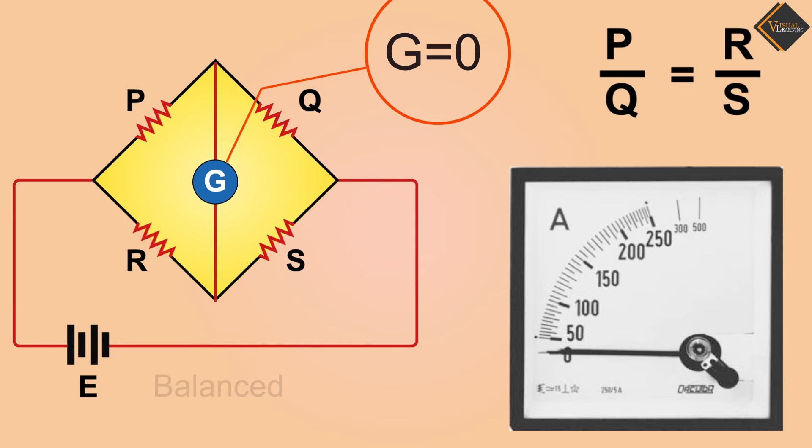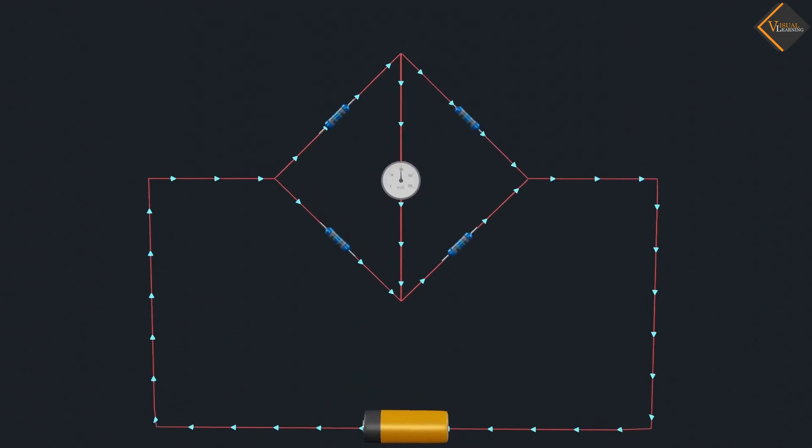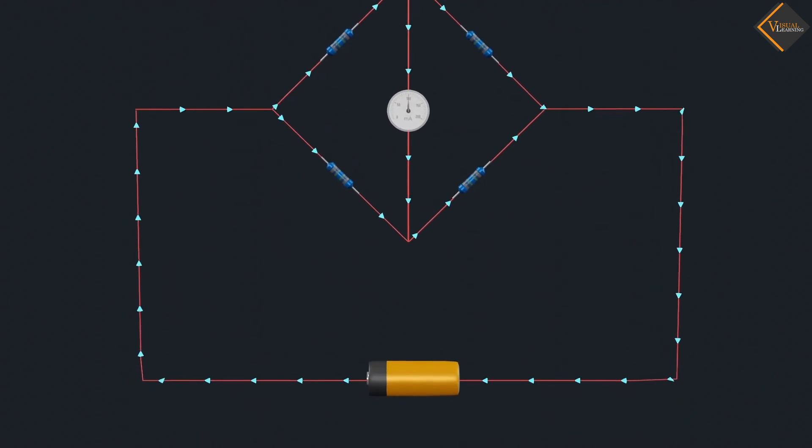This condition is called the balance condition. In normal conditions, the bridge is unbalanced and current flows through the galvanometer.